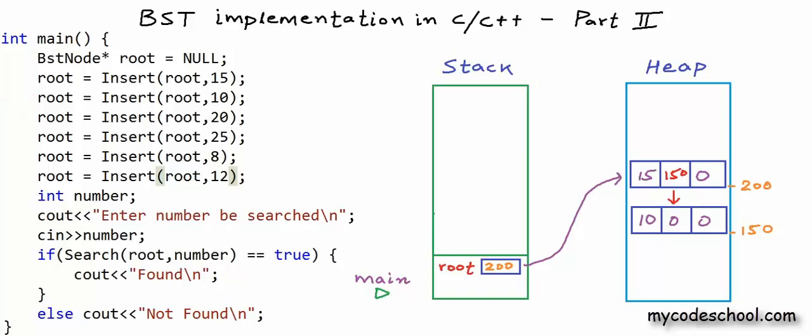Next, main calls insert to insert number 20. The allocated memory in stack will again grow and shrink. When control returns to main after this insert call, we will have a node in heap with value 20 set as the right child of the node at address 200. Say this new node is at address 300, so the right child field of node at address 200 is set to 300.